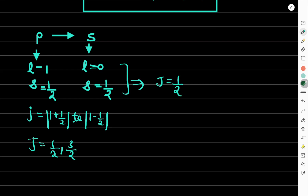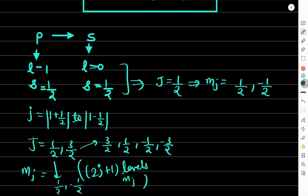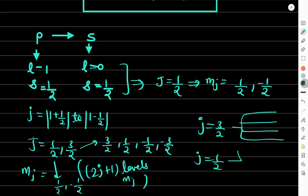The mj levels from splitting: for j = 3/2 we get mj = 3/2, 1/2, −1/2, −3/2 (4 levels); for j = 1/2 we get mj = 1/2, −1/2 (2 levels). Applying the selection rule ΔmJ = 0, ±1 gives us the allowed transitions between these levels.